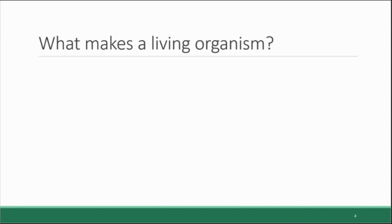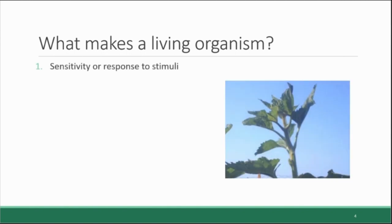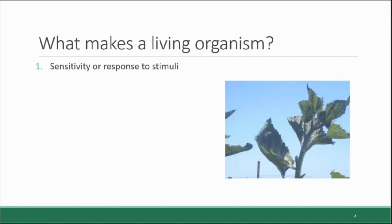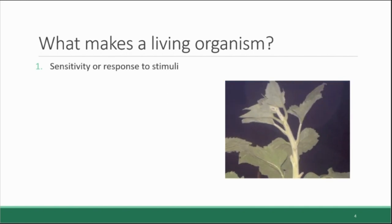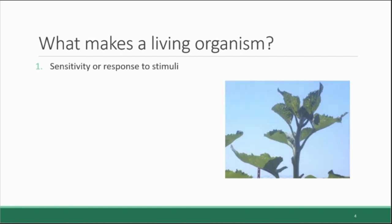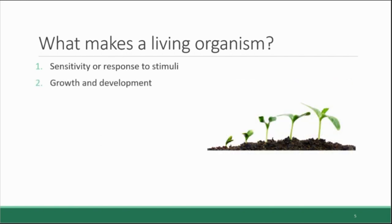The first characteristic is sensitivity or response to stimuli, meaning that living things respond to signals from the environment — such as a sunflower tracking the movement of the sun. The second is growth and development, meaning that living things grow and mature, and as they do, they develop the traits that are genetically encoded in their DNA.